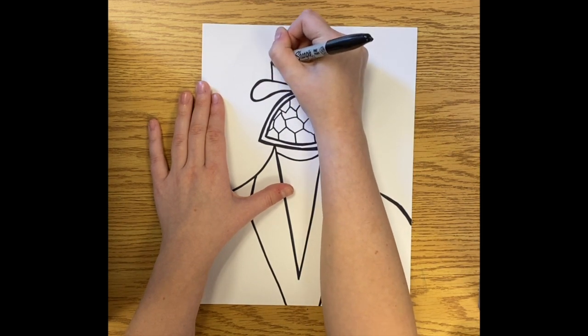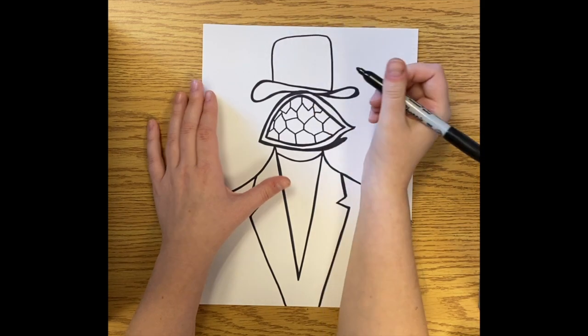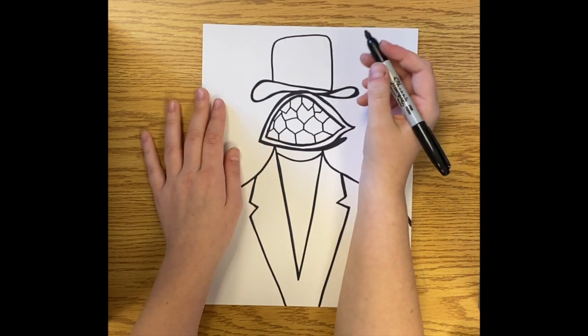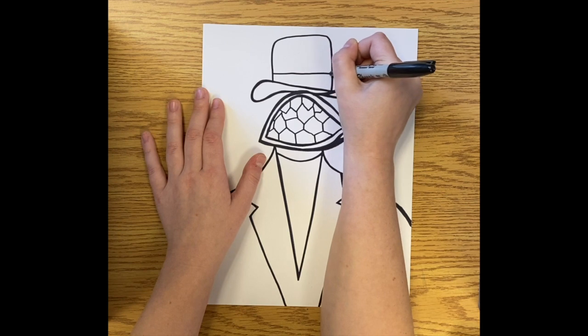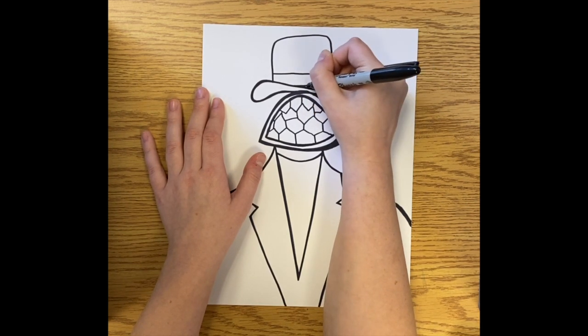Now I need to draw the top of my hat. So I go up almost to the top of the paper, out and around to make the hat shape. And then I add kind of a line just to add more details to my hat.